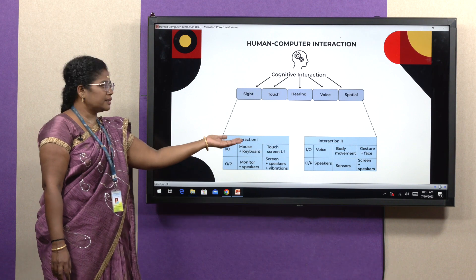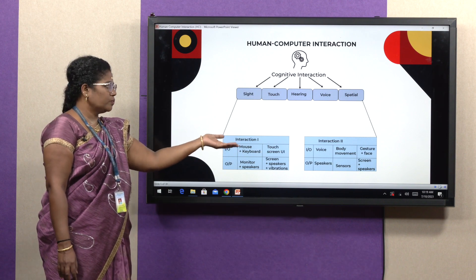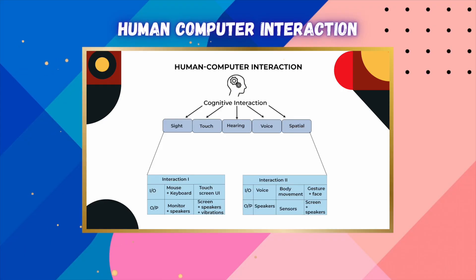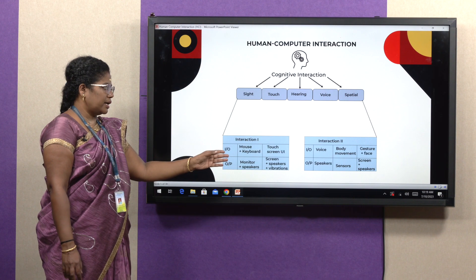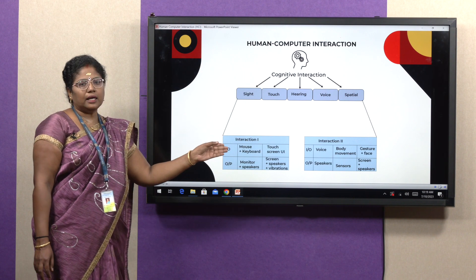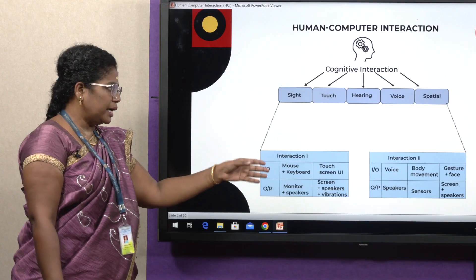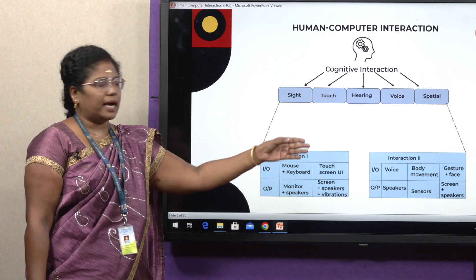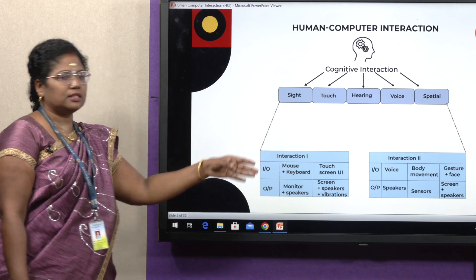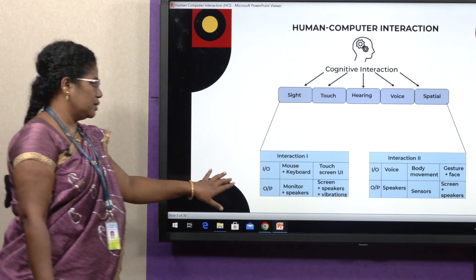In phase interaction two, input devices are mainly through voice, body movement, and gesture along with the face. The output devices mainly use speakers, sensors, screens, and speakers combined.